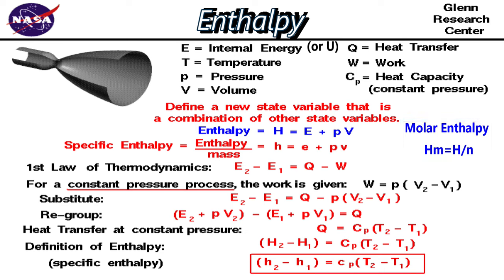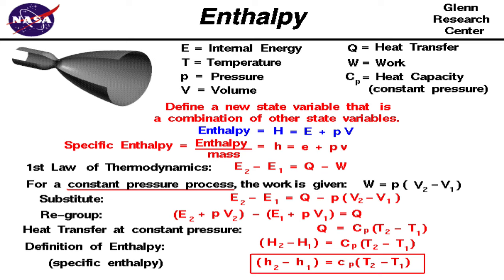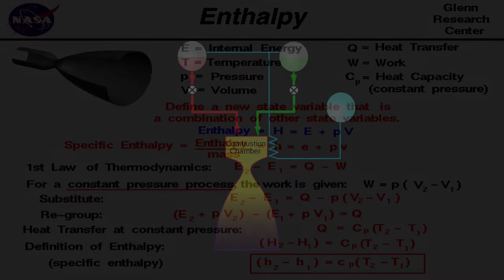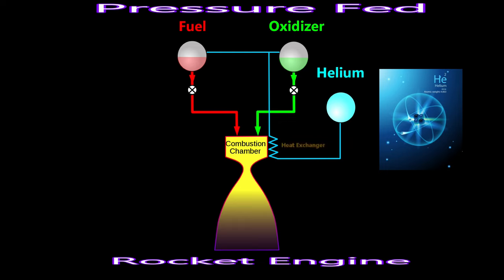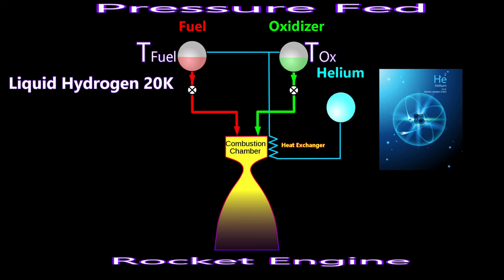We need to understand these thermodynamic systems to understand modern rocket engines. Consider a simple pressure-fed rocket engine: a tank of fuel and a tank of oxidizer pressurized with high-pressure helium — no pump. We use helium because it is a very small atom that does not easily bond with itself or other elements, making it the perfect pressurizing agent. Each tank is at a certain temperature — T-fuel and T-ox. If the fuel is liquid hydrogen, it will be at or below 20 Kelvin; for liquid oxygen, about 70 Kelvin. That means quite a bit of insulation is needed between these tanks.